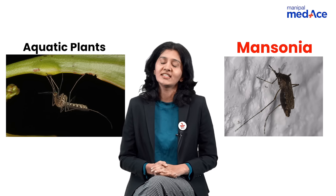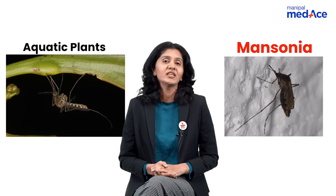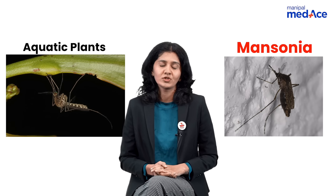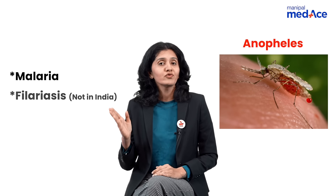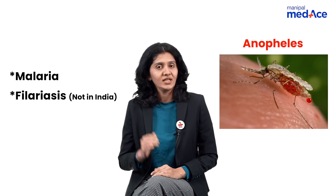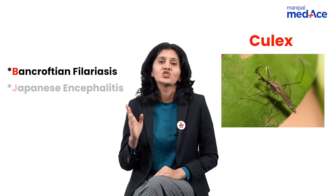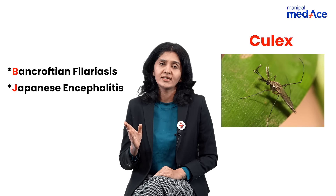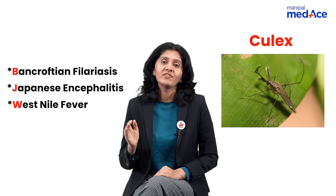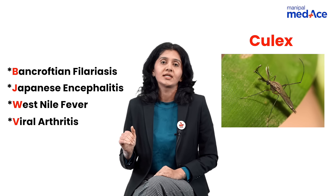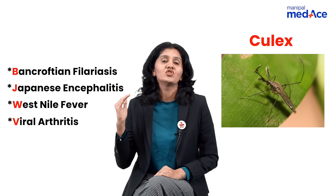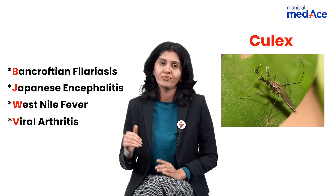What are the different diseases transmitted by each of these mosquitoes? Anophilus can transmit malaria and also filaria, but not in India. Culex can transmit Bancroftian filariasis, Japanese encephalitis, West Nile fever, and viral arthritis (BJVW).